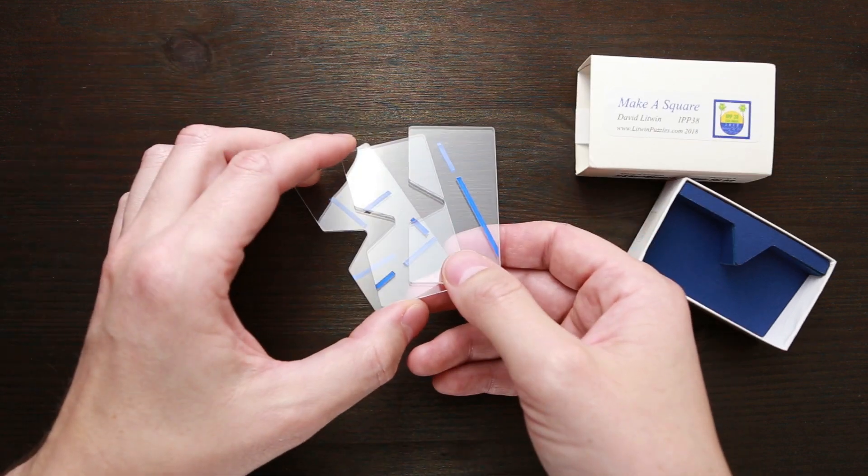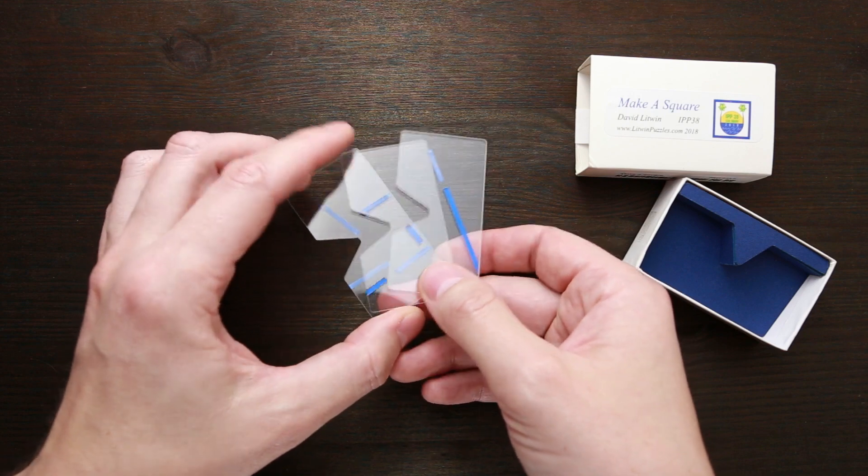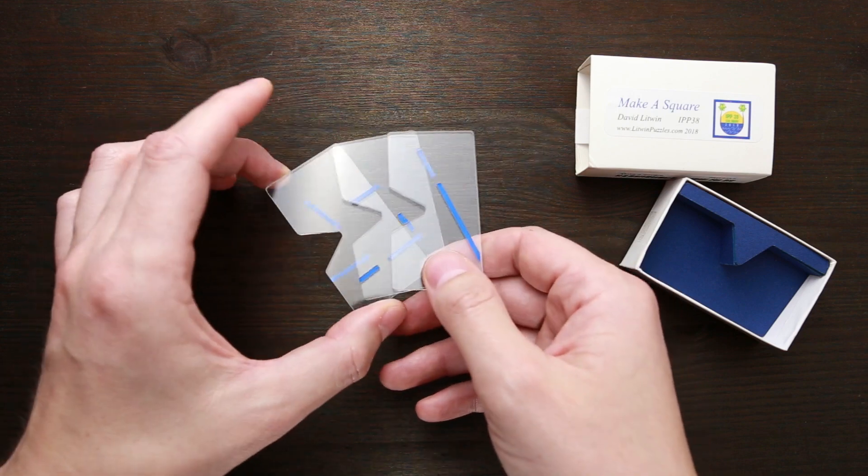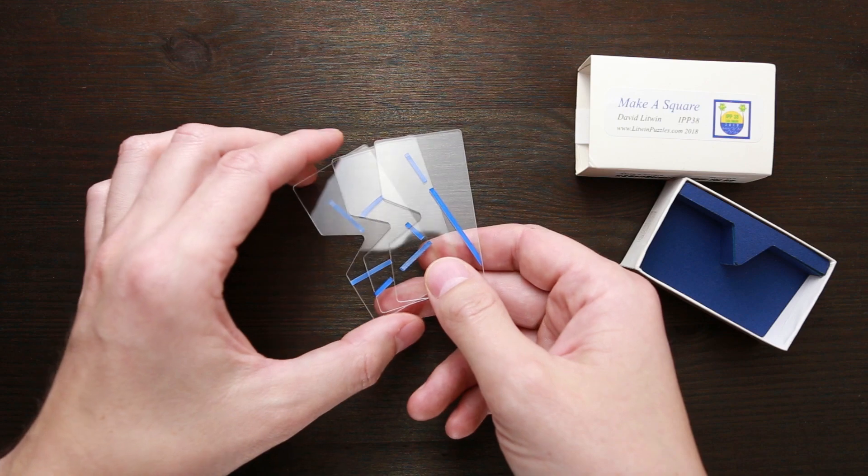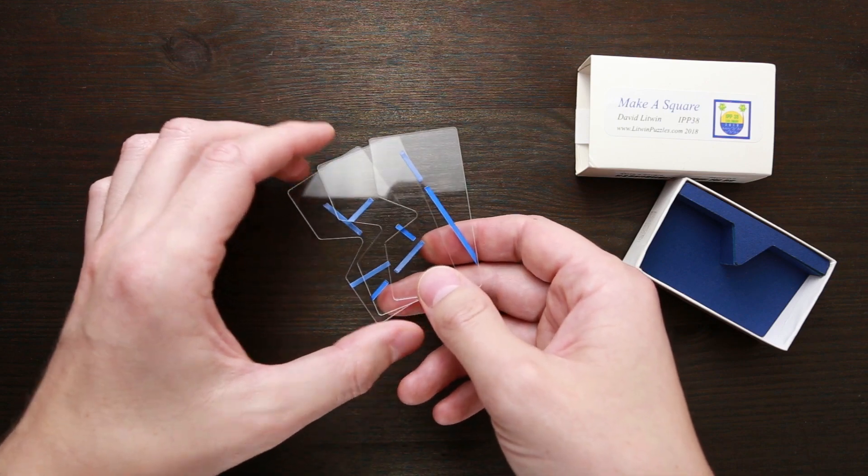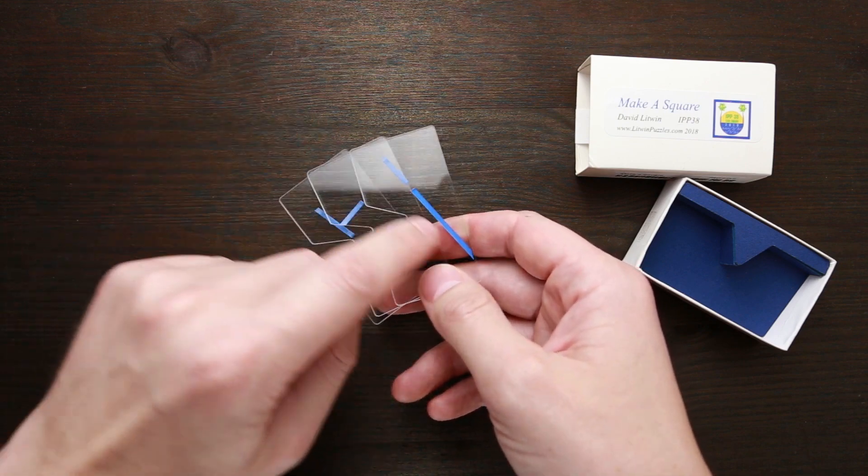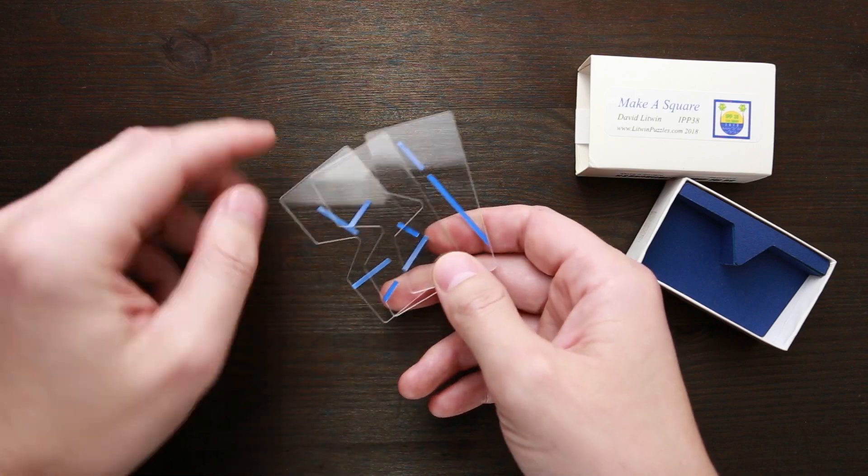This puzzle has three parts. As you can see, each part has exactly the same shape. The difficulty level of this puzzle is nine out of 10 and the object is to make a square using these blue etched lines.